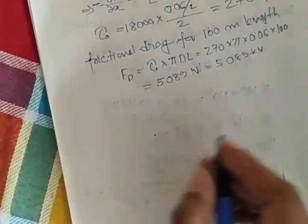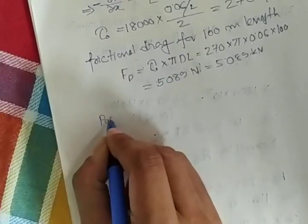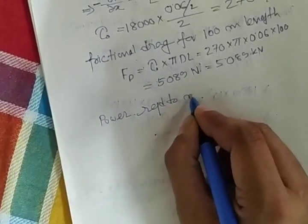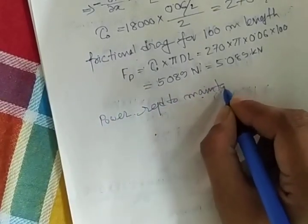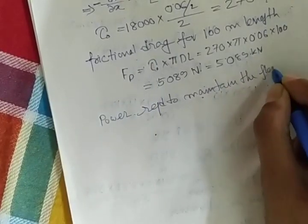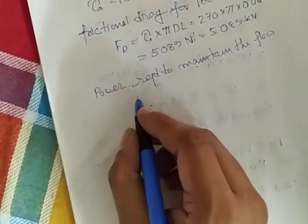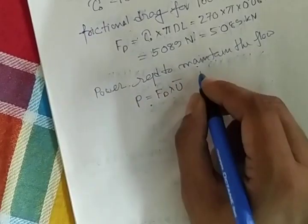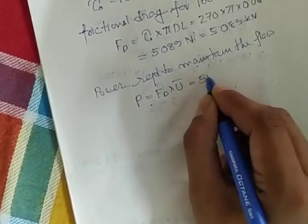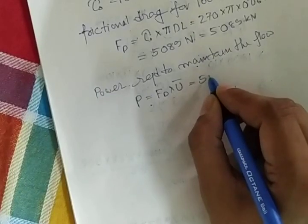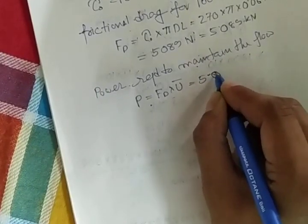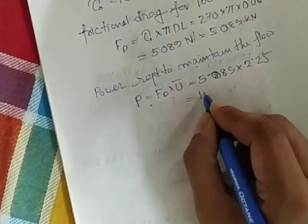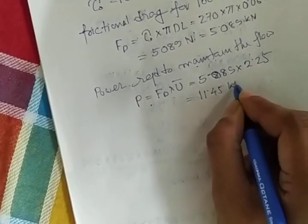After that, you have to find out power required to maintain the flow. Your power p equals fd into average velocity. So 5.089 into 2.25, it will be 11.45 kilowatt.